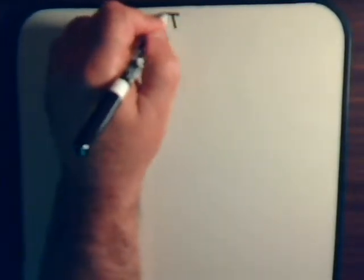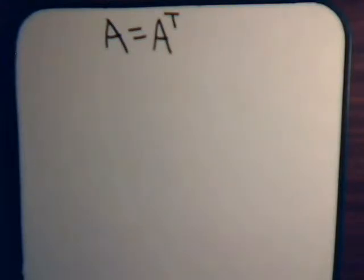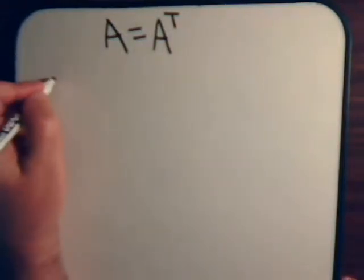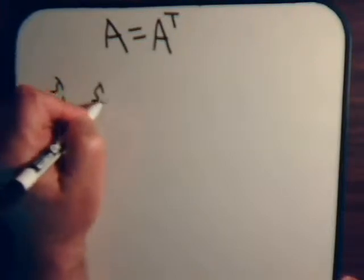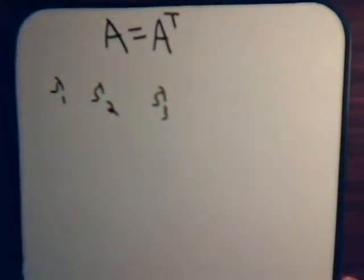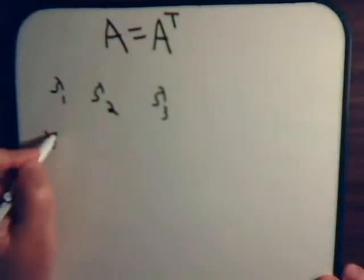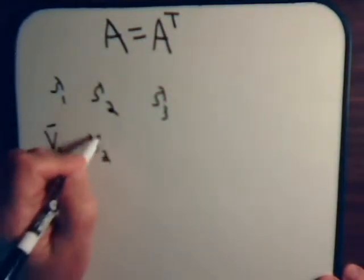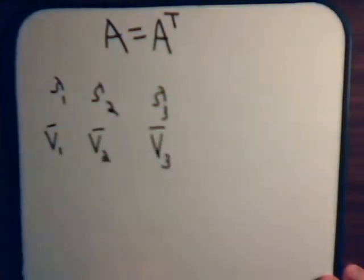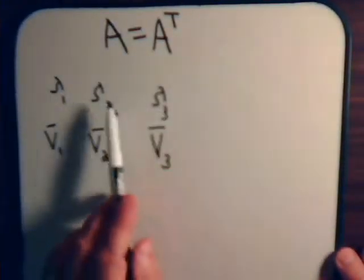So we have here a matrix that is symmetrical. And I think it was in video number 23, we proved that for any matrix, when you have distinct eigenvalues, that their corresponding eigenvectors are linearly independent.